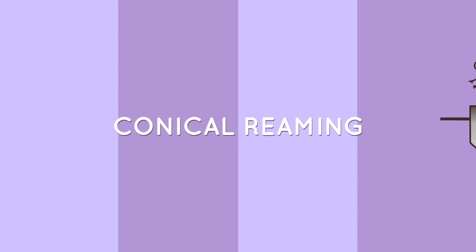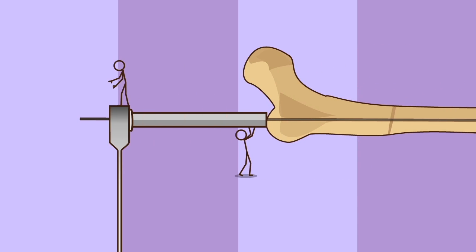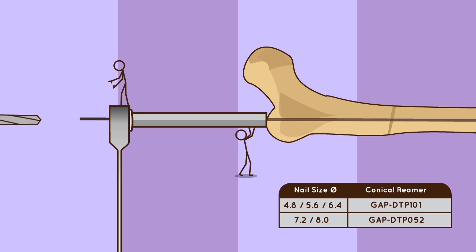Conical reaming: select the conical reamer corresponding to the selected nail size. Ream through the tissue protector and over the guide wire. Continue reaming until the stopper reaches the edge of the tissue protector handle.